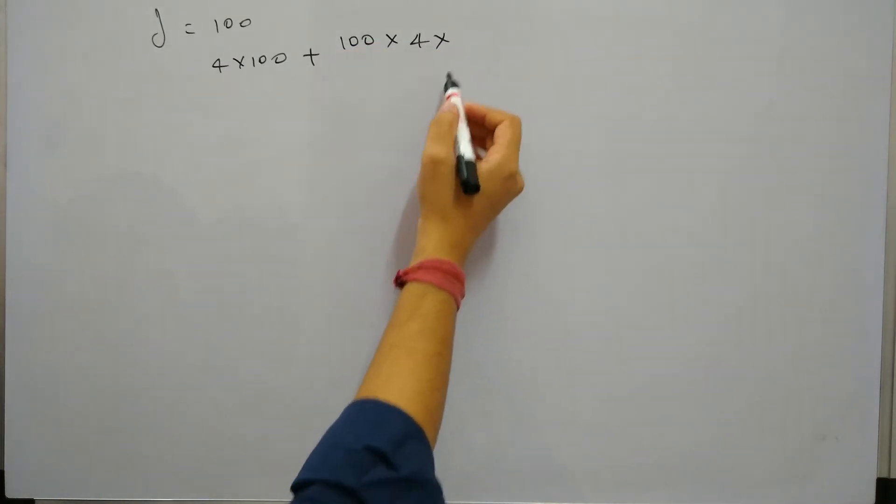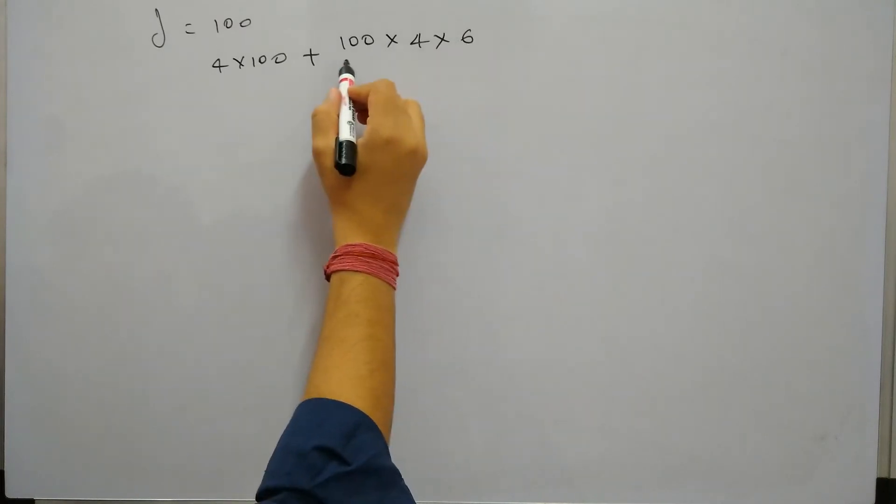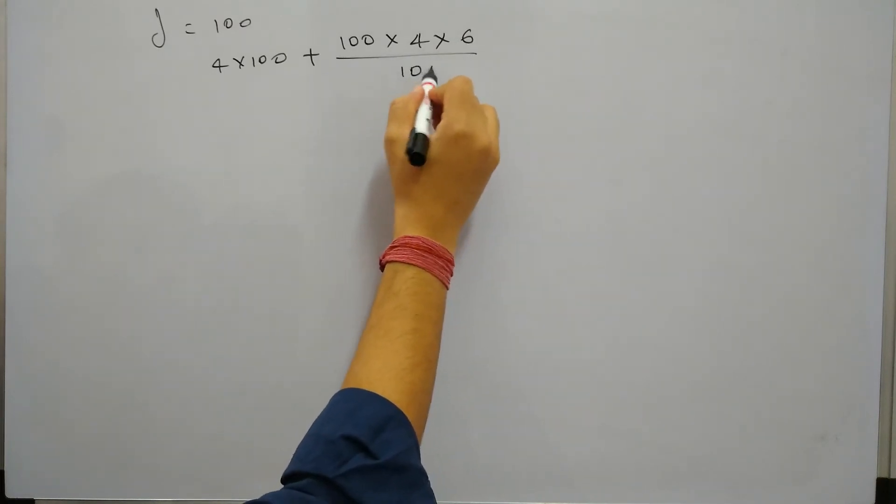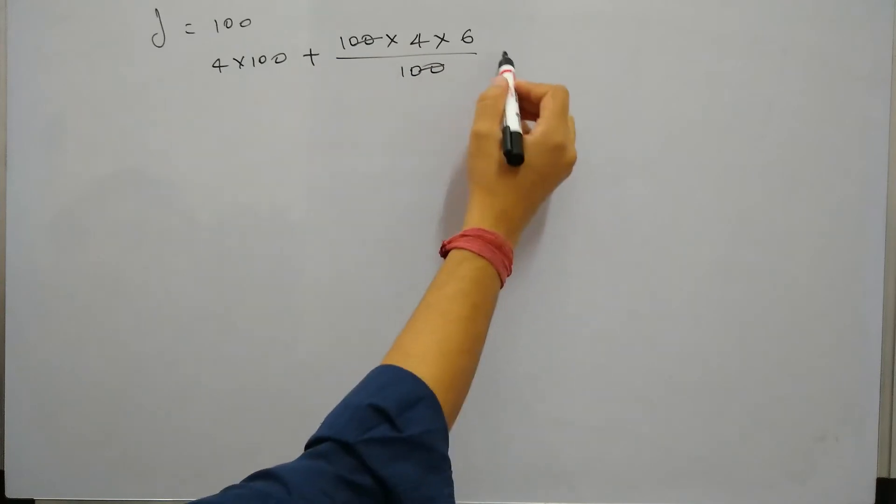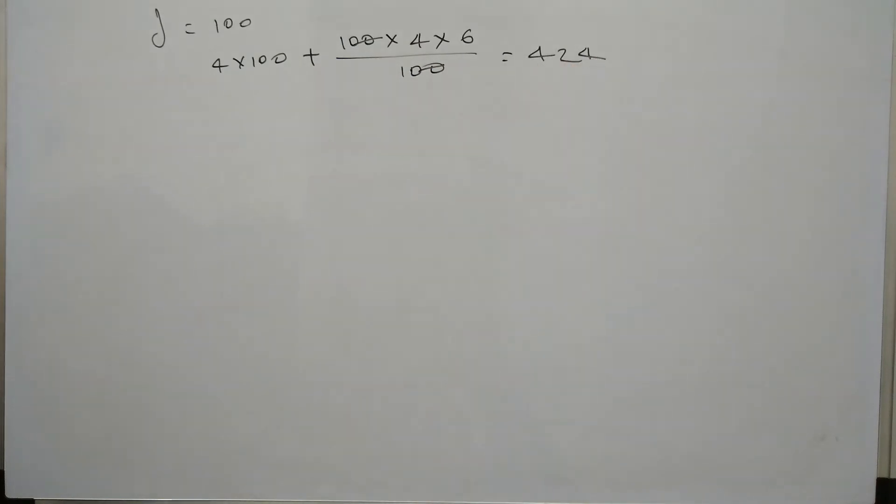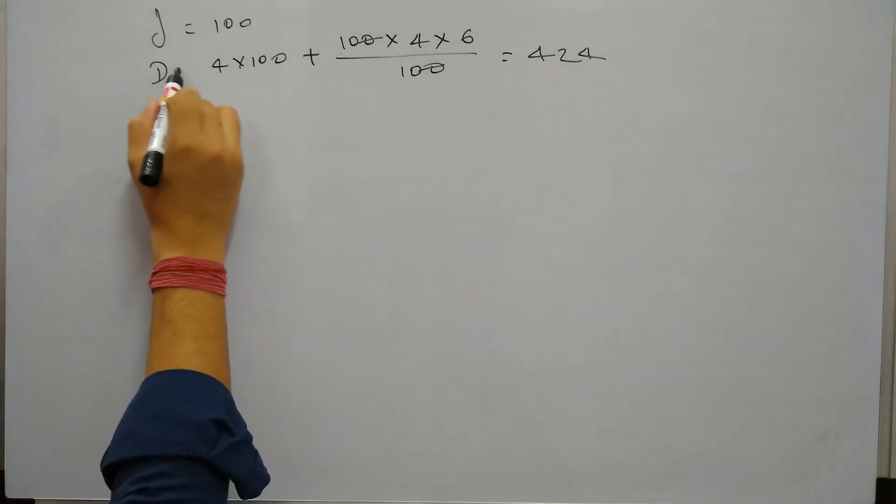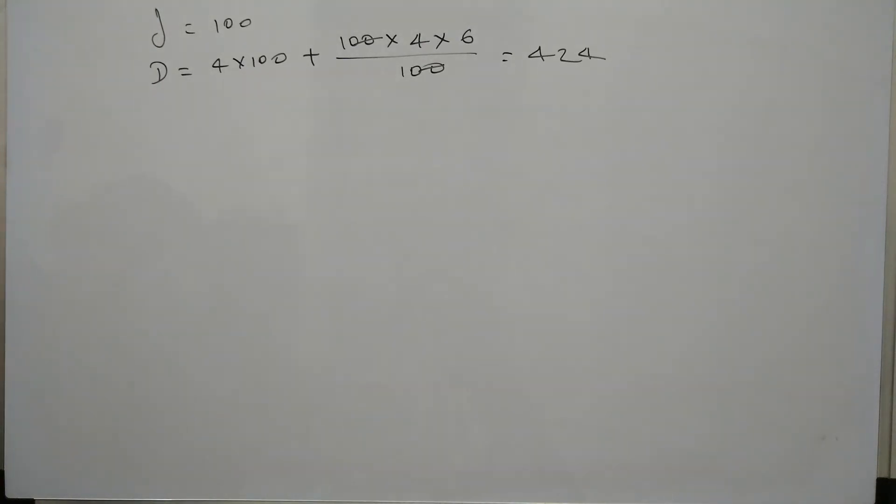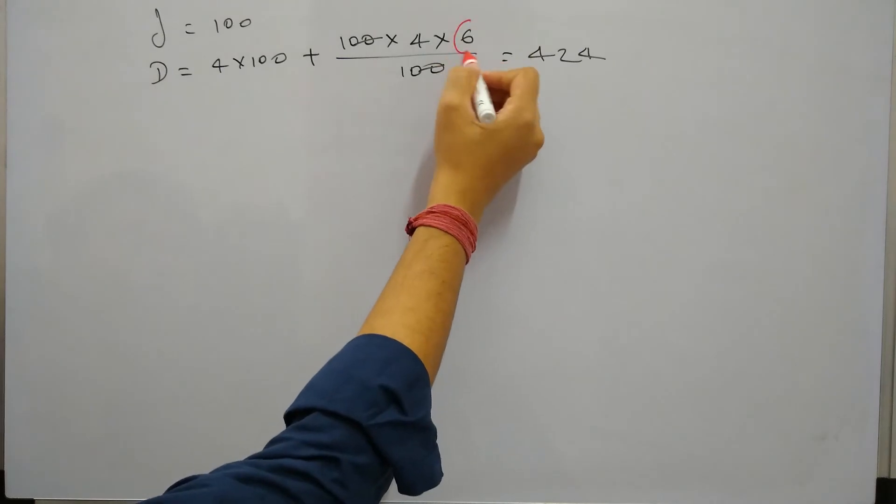The rate of interest is 4% and tenure will be 6 years by 100, so this is 424. So if my installment is 100 rupees, my debt is coming as 424. Now this is the only hidden part here, how I wrote 6 years.